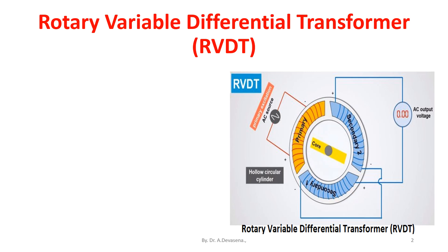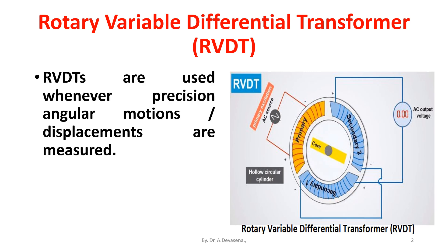RVDTs are used whenever precision angular motions or displacements are measured. The RVDT uses the same principle as LVDT, except that it has a rotating magnetic core.